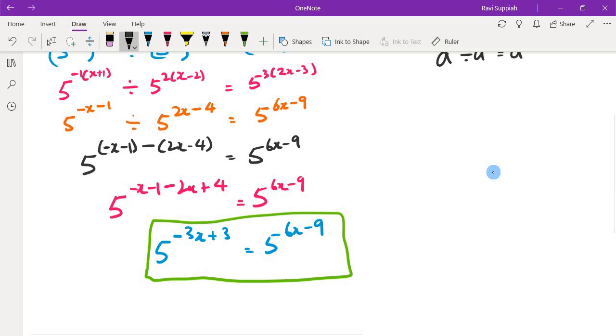As you can see right now, both the bases are the same, which means that I can now compare my powers here. So this power and this power are now considered the same. So let's go on to do that here. So I'm going to write it here: minus 3x plus 3 is equal to 6x minus 9.